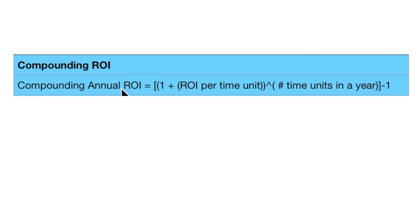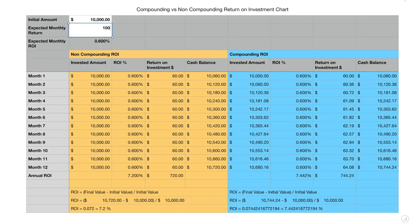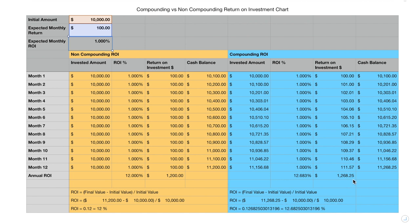It's a bit more complex to calculate the compounding rate of return, but here's the formula: (1 + return per time unit) raised to the power of the number of time units in the year, then subtract 1. For monthly compounding over a year, that's (1 + 0.01)^12 − 1, or 1.01^12 − 1, which works out to 12.683%. Checking this against the chart calculator with $100 input confirms exactly 12.683% — we can estimate the result without filling out the chart completely.